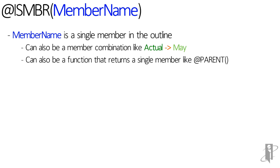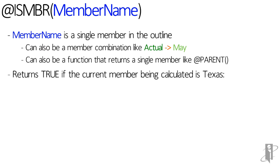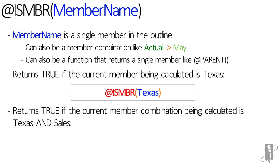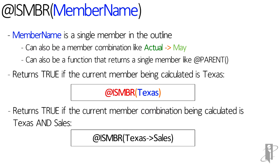You can also use a function that returns a single member, like an @Parent or an @Child. So let's say we want to determine if we're calculating the great state of Texas. We could say @isMember Texas. Or if we wanted to return true if we're calculating Texas Sales and only the combination for Texas Sales, you could say @isMember Texas crossed in Sales.